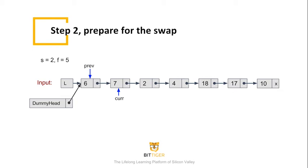In this problem, the prev pointer stays still at node 6. The cur will gradually move to the end of the sublist until the sublist is reversed.